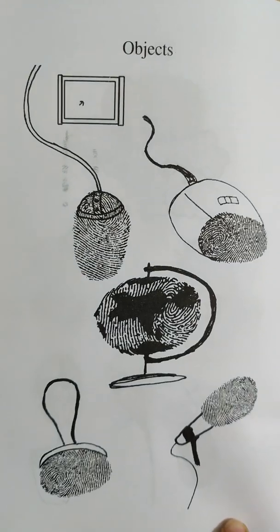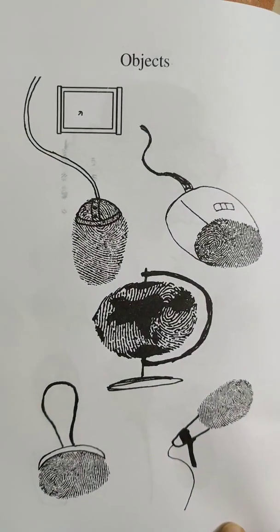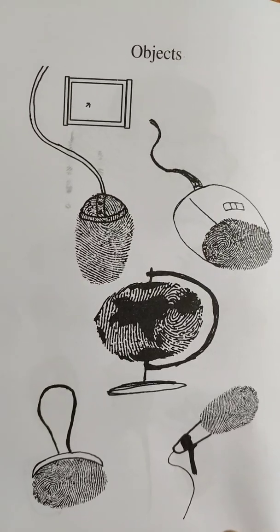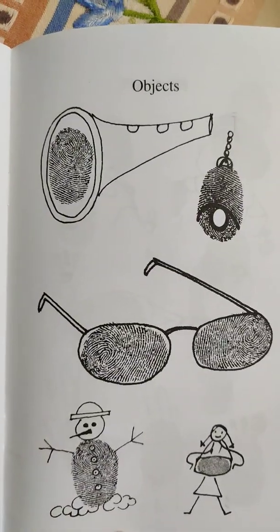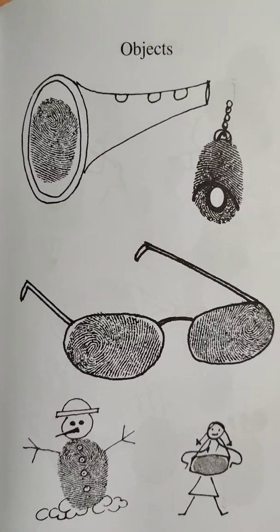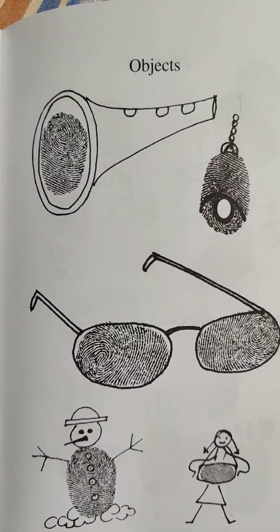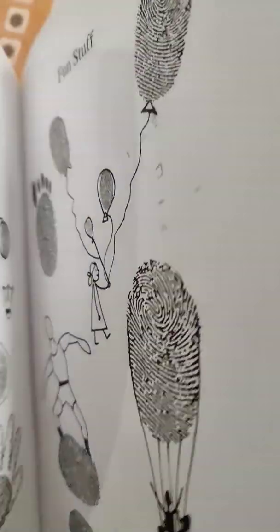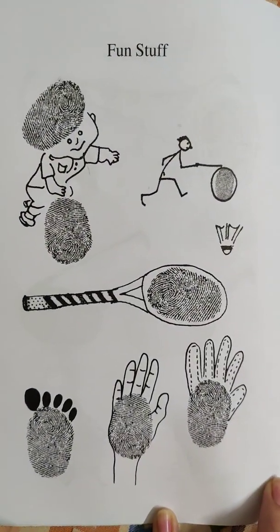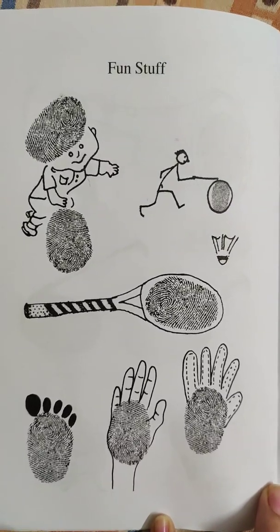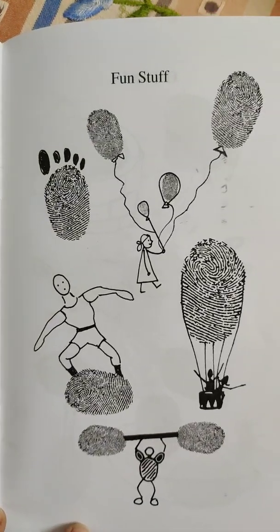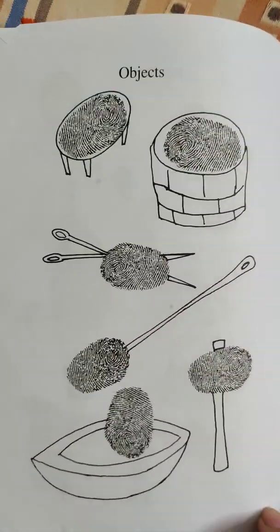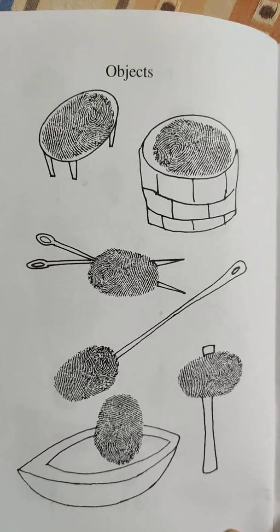These are very creative ideas and very simple to make at the same time. This is a mouse — you can see these objects. There is a globe as well. You can also make a snowman, you can make spectacles, and so on. Just look at these pictures — some more fun stuff and some objects you can make.